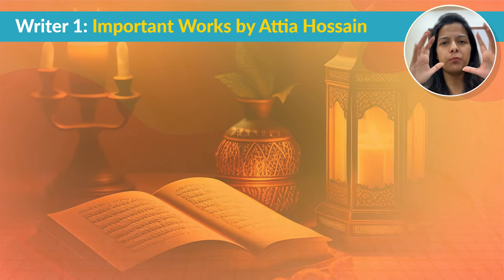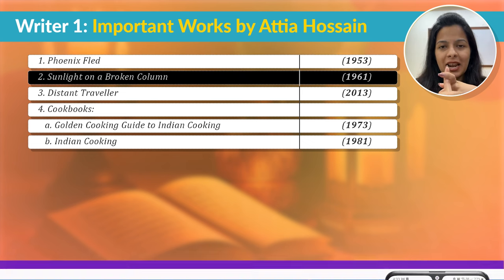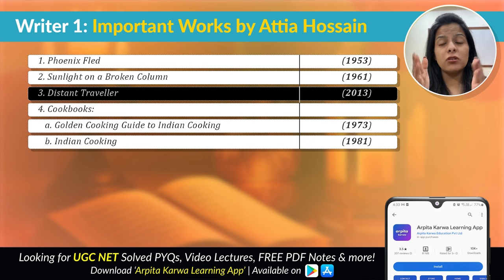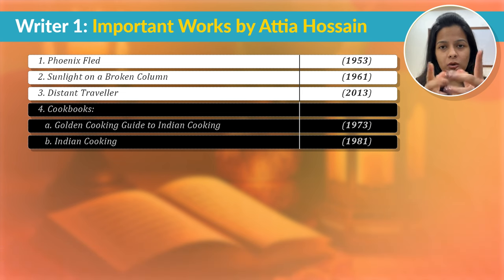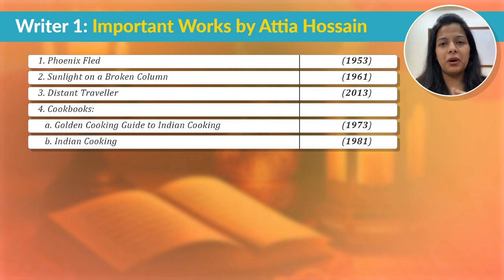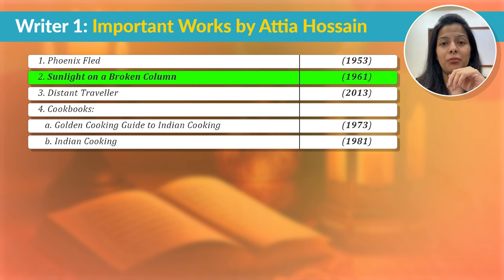Now let's look at some important works by Attia Hussain. The list starts with Phoenix Fled, then Sunlight on a Broken Column, and Distant Traveler. Apart from these novels, she also published cookbooks: The Golden Cooking Guide to Indian Cooking and Indian Cooking. Out of all these works, the most important for UGC Net English is Sunlight on a Broken Column.